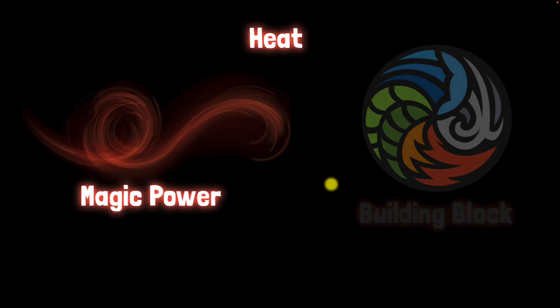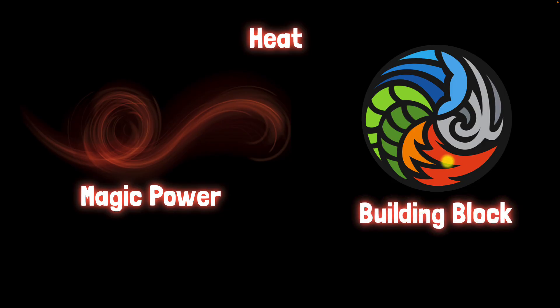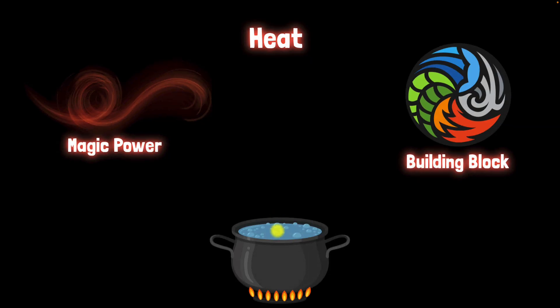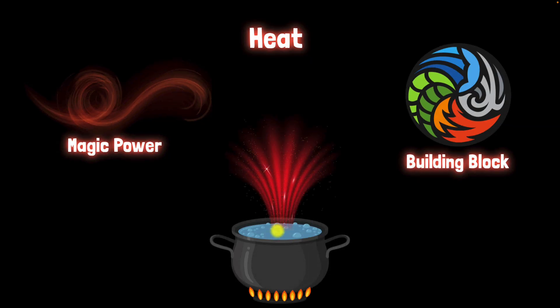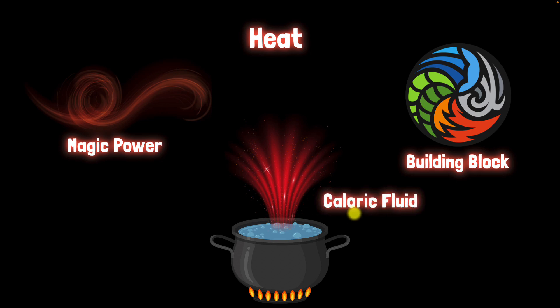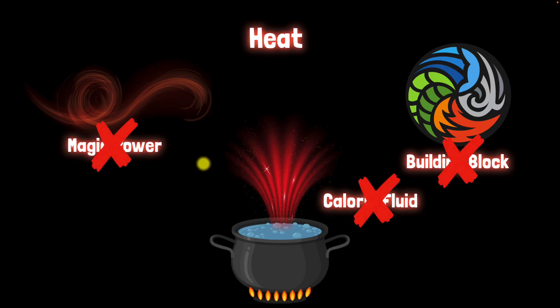For thousands of years people had all kinds of theories. Some thought there was some kind of a magic power. Others believed that it was a fundamental element — a fundamental building block of the universe like air, water, and earth. By the 1700s people started believing that heat was some kind of an invisible fluid that flowed from a warmer object to a colder object. In fact they called this the calorific fluid — the word calorie comes from the Latin word for heat. But eventually all of these theories got replaced by what we understand today.